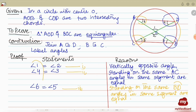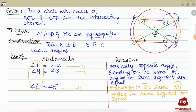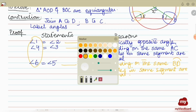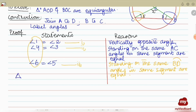From these three equations, angles 1, 4, and 6 belong to triangle AOD, and angles 2, 3, and 5 belong to triangle BOC. Since all corresponding angles are equal, both triangles are equiangular. Therefore, triangle AOD and triangle BOC are equiangular — proved using the theorem of angles in the same segment.